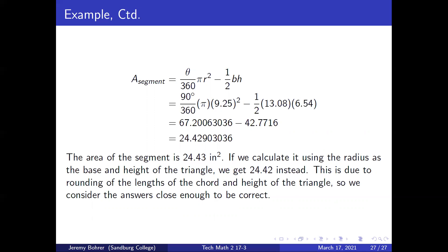If we calculate it using the radius as the base and height of the triangle, we get 24.42 square inches instead. This is due to rounding of the lengths of the chord and height of the triangle, so we consider the answers close enough to be correct.